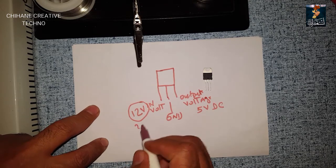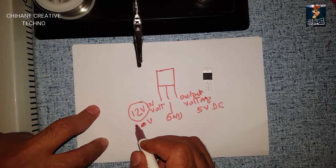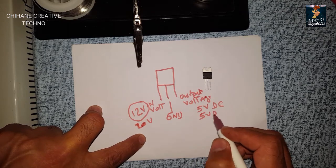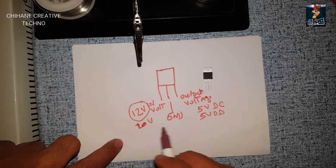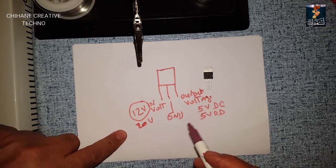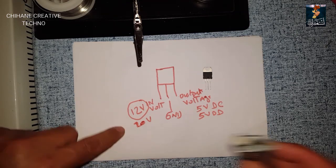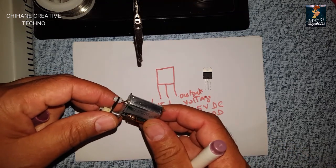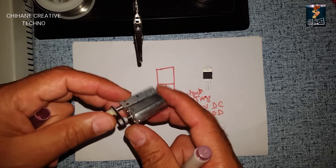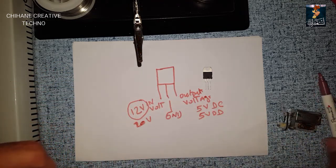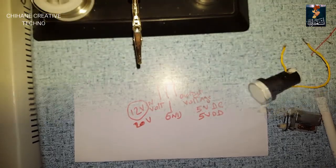Even if you put like 20 volts, it will give us 5 volts DC. So I'm going to try it with this motor—this is a 5-volt motor—and also I'm going to try it with my light. Now let's show you how it works.